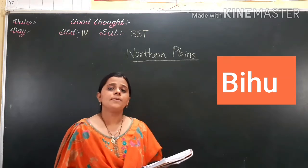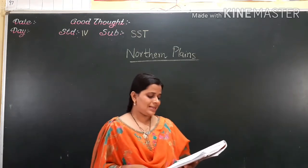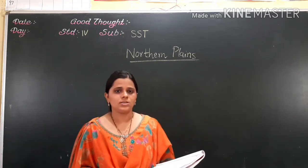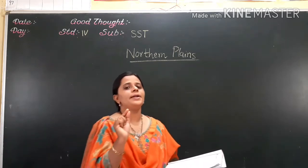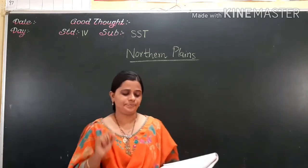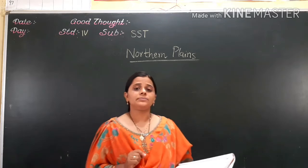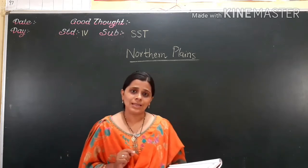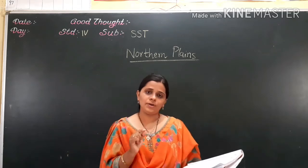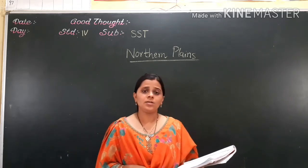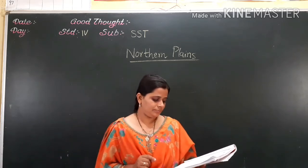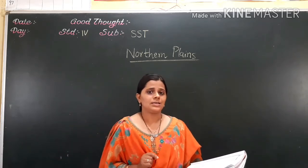Now next we will discuss the match the following. That is: Katlaj — the answer is River Indus, number one. Next: Sundarbans — Sundarbans is the largest delta in the world, number two. Ganga — Ganga is the most populated part of India. Allahabad — Sangam. Hope you have completed these textbook objectives.